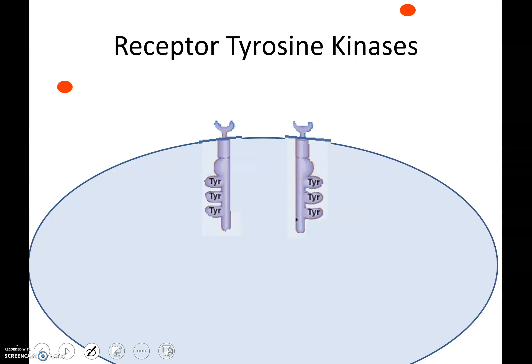Here we have receptor tyrosine kinases. Tyrosine is an amino acid. So right here, this is a polypeptide — a protein that is made of amino acids. The amino acid that we are specifically dealing with in this is tyrosine.